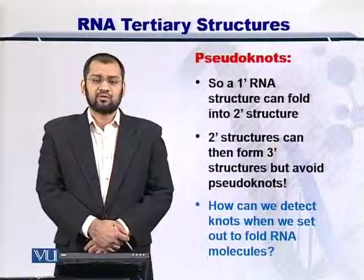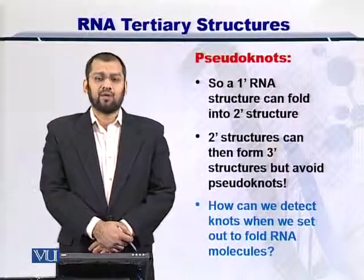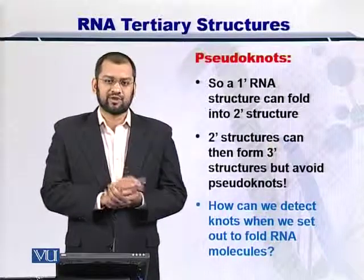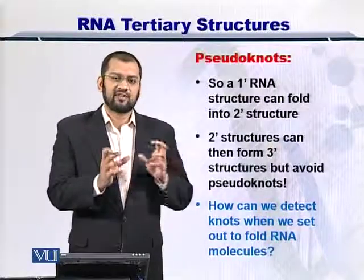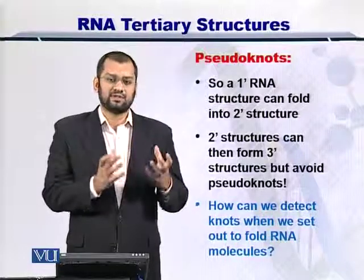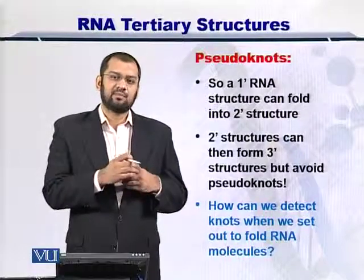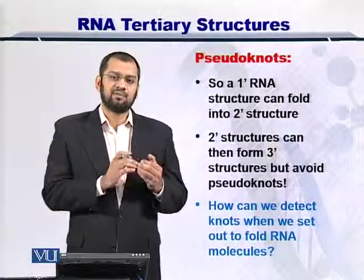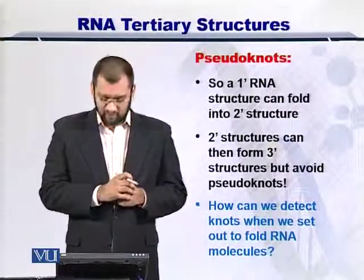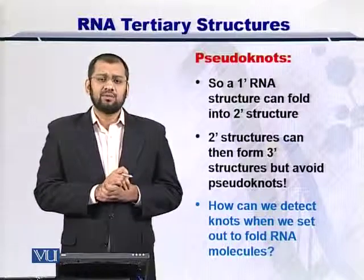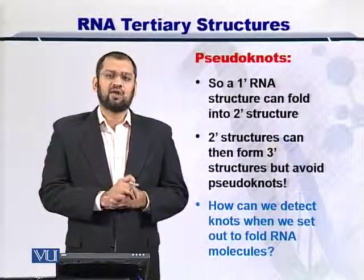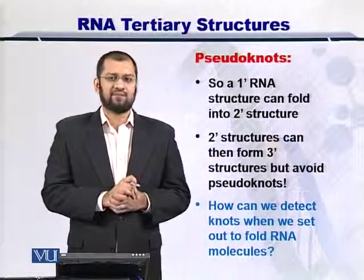To summarize: the primary structure of the RNA folded to form the secondary structure. Several secondary structures came together to form a tertiary structure, and yet some unpaired bases within the tertiary structures came together to form pseudoknots. The important point here is that if such pseudoknots can be formed, how can we detect them?